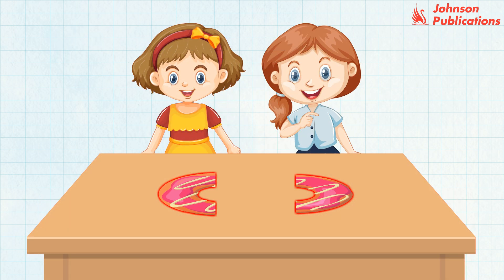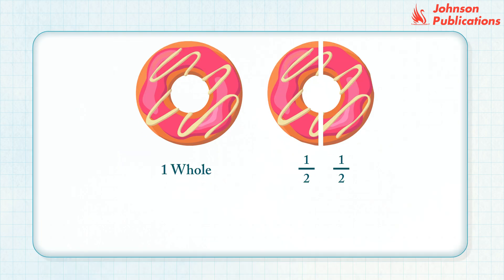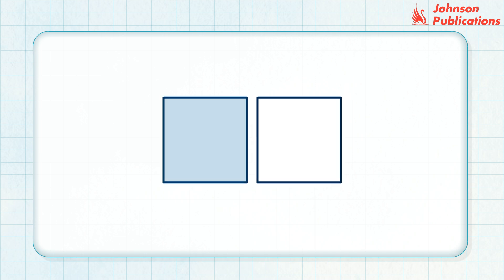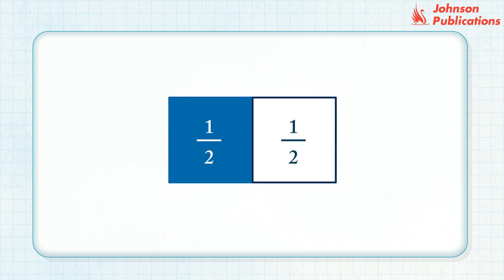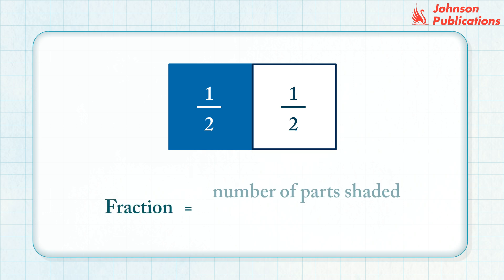Srishti eats one part and gives the other part to her friend Pinky. When Srishti divides the donut into two equal parts, each part is called one half. It is written as one upon two and read as one by two. Look at the given figure — there are two equal parts of this shape. Each part is one half, and one half of this shape is shaded blue. Thus, a fraction equals the number of parts shaded upon the total number of parts.